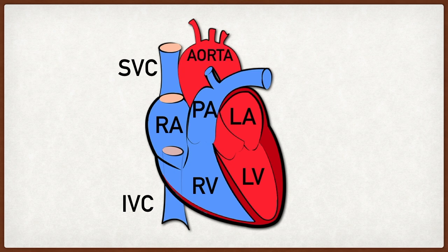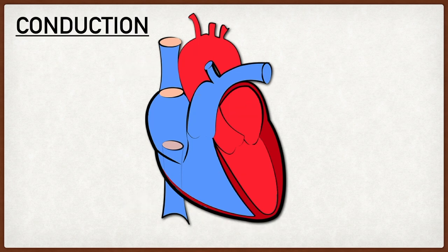We also have the main pulmonary artery, or pulmonary trunk, which emerges from the right ventricle and delivers unoxygenated blood to the pulmonary circulation to get oxygenated. Lastly, we have the aorta, the main blood vessel that emerges from the left ventricle and delivers oxygenated blood to the rest of the body.